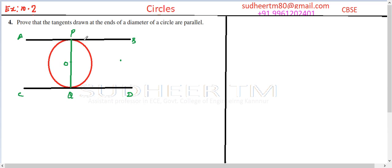Now since AB is tangent and OP is radius, tangent and radius makes 90 degrees. And CD and OQ are tangent and radius, so here angle Q also makes 90 degrees.